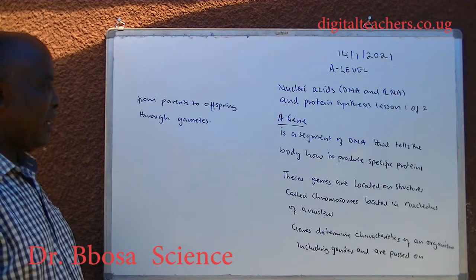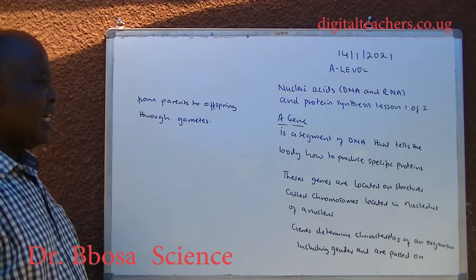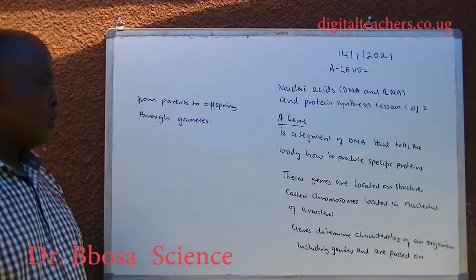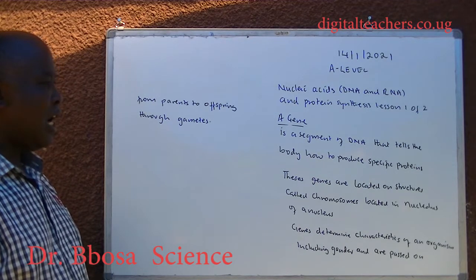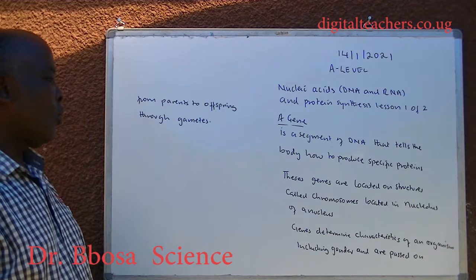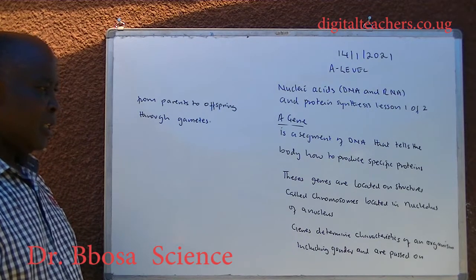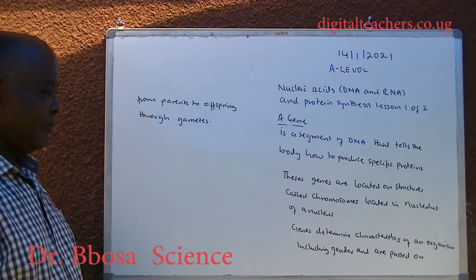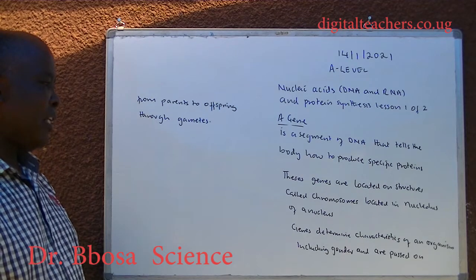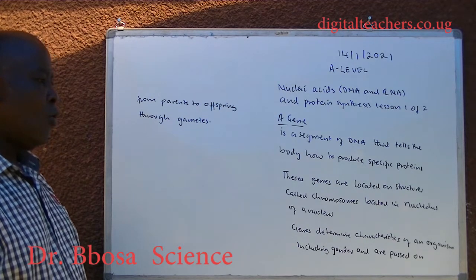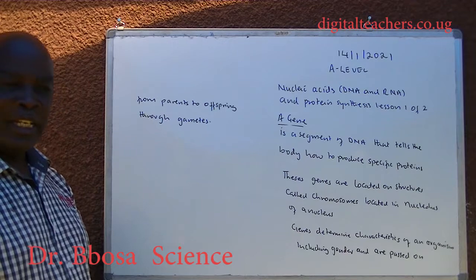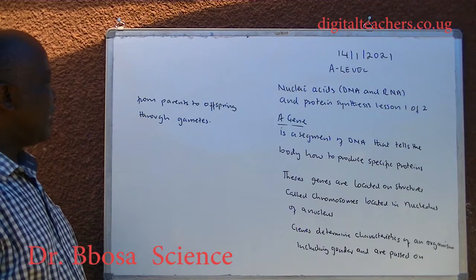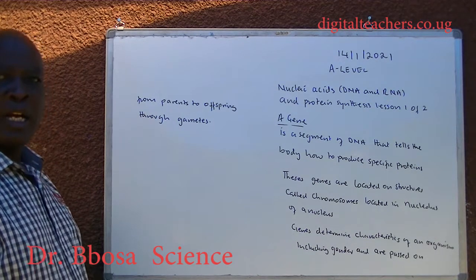A gene is a segment of DNA that tells the body how to produce specific proteins. These genes are located on structures called chromosomes, located in the nucleolus of a nucleus. Genes determine characteristics of an organism, including gender, and are passed on from parents to offspring through gametes.